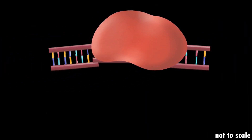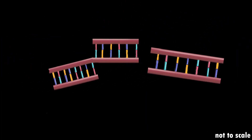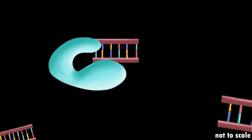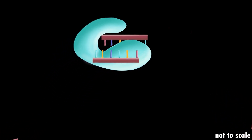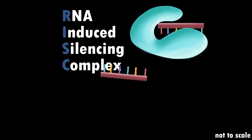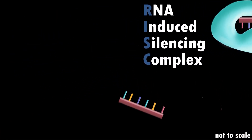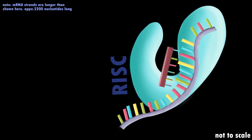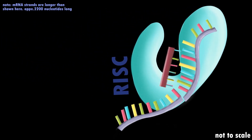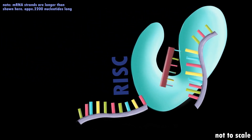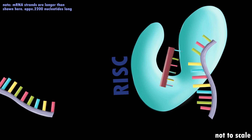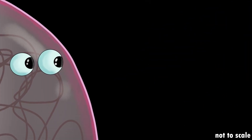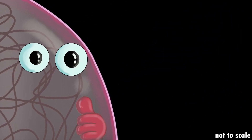An enzyme chops the double-stranded RNA into small fragments. One strand of the fragment is chosen by a protein to make a RISC. The chosen strand becomes a guide for the RISC to find the target mRNA. Therefore, the target mRNA is degraded while the DNA stays intact.